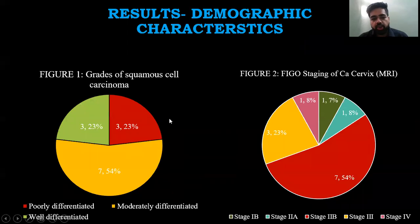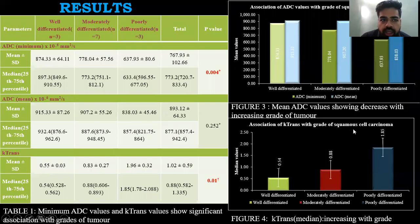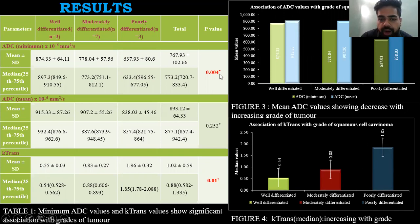Compiling the results: out of 13 patients, 7 were moderately differentiated squamous cell carcinoma cervix, 3 were poorly differentiated, and 3 were well differentiated. Regarding FIGO staging, 7 patients were stage 2B, 3 were stage 3, 1 was stage 4, 1 was stage 1B, and 1 was stage 2A. The mean ADC minimum and K-trans values showed significant association with grade — poorly differentiated lesions had lower ADC compared to well-differentiated lesions, which had higher ADC. Similarly, median K-trans was higher for poorly differentiated tumors and lower for well-differentiated tumors. The association was significant with P-value less than 0.05.